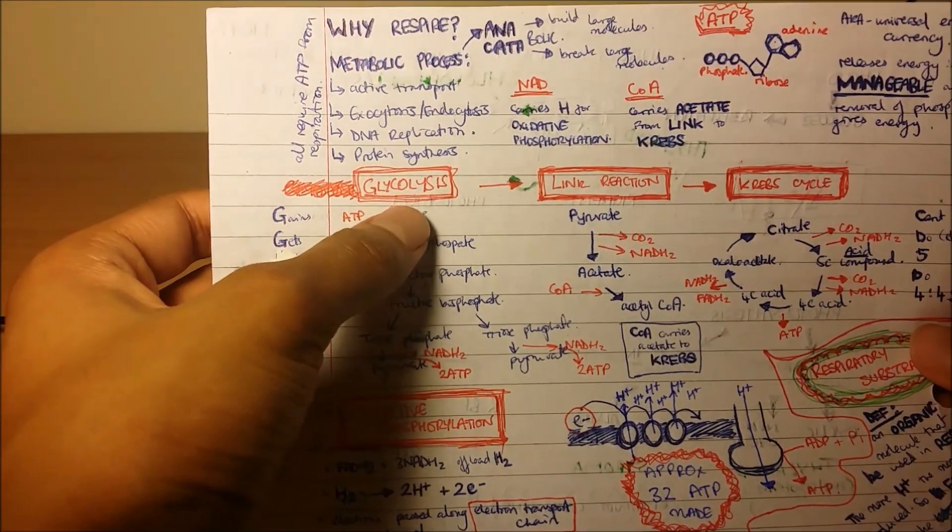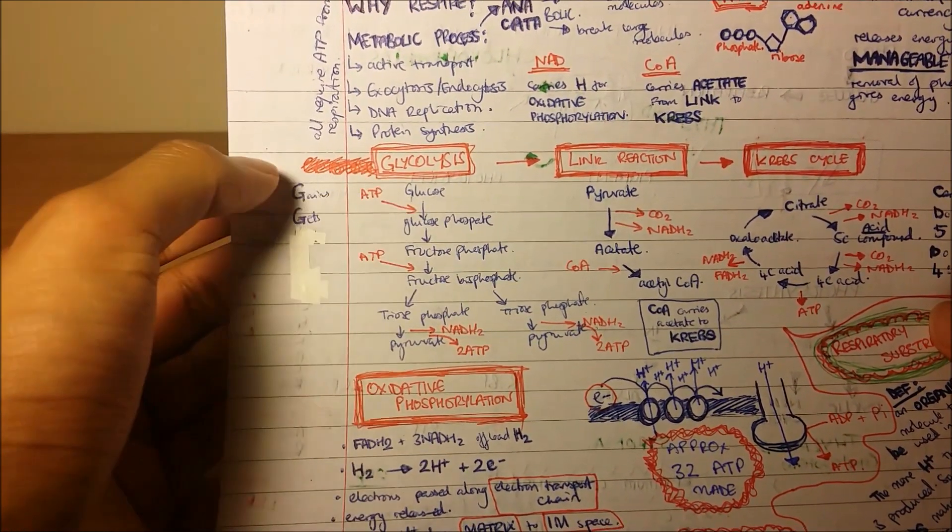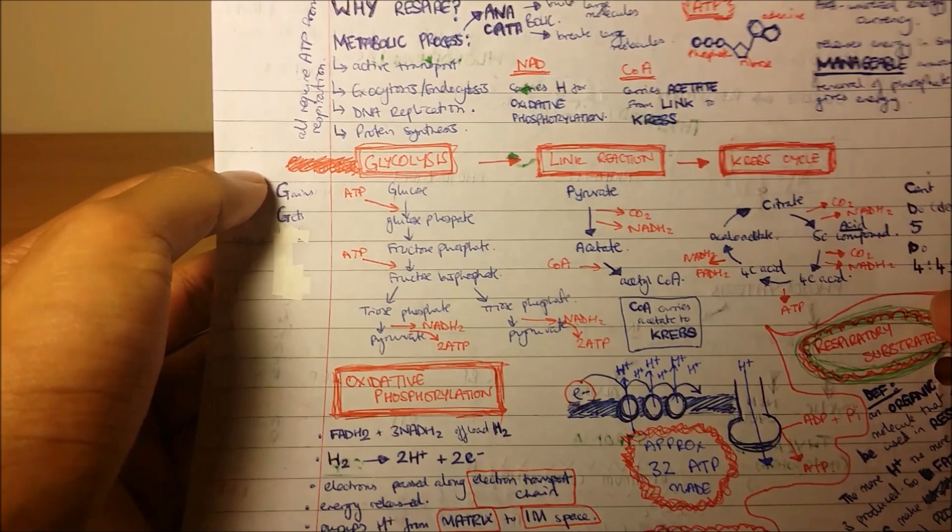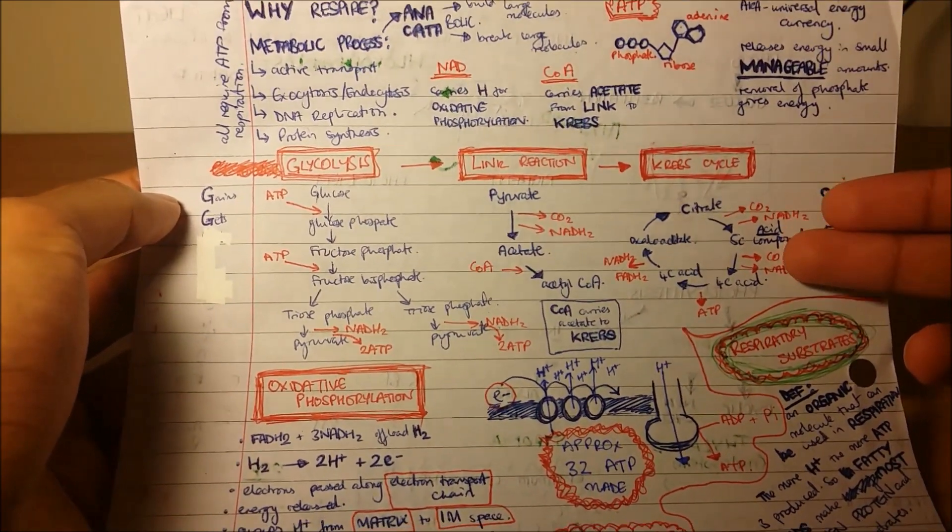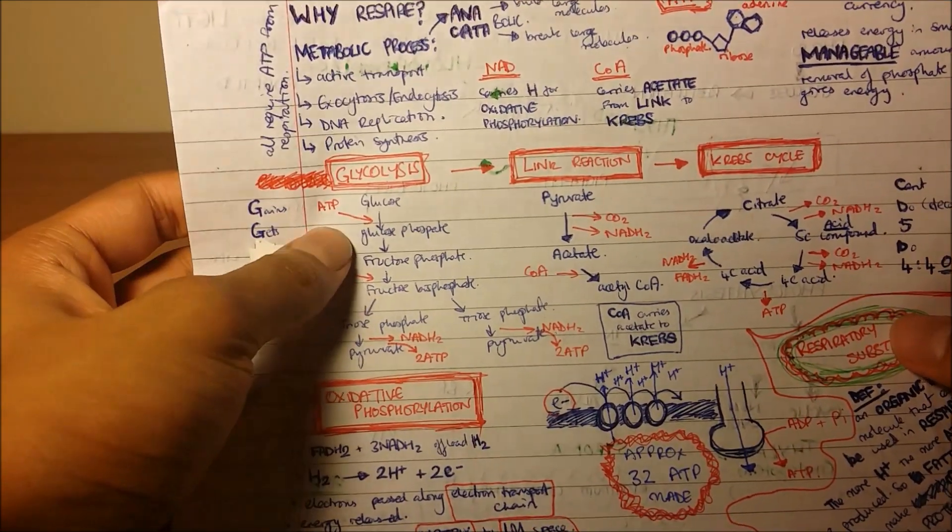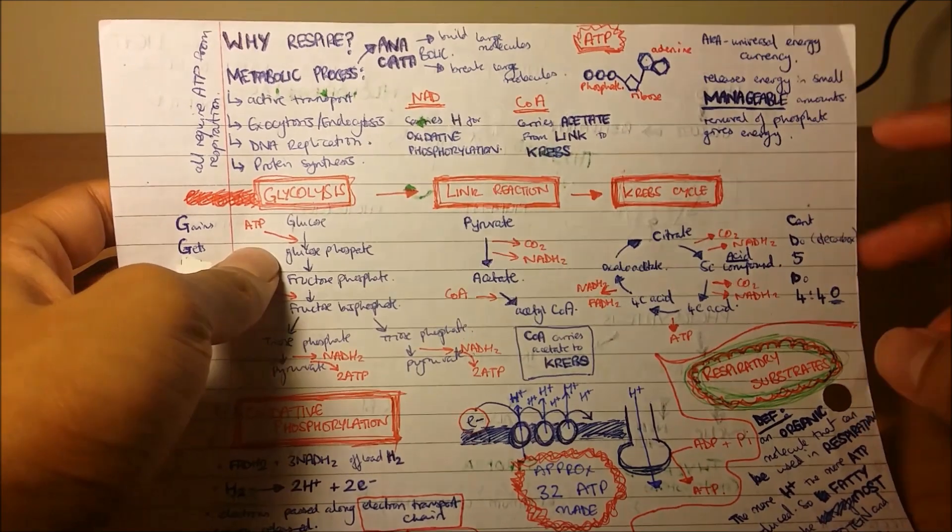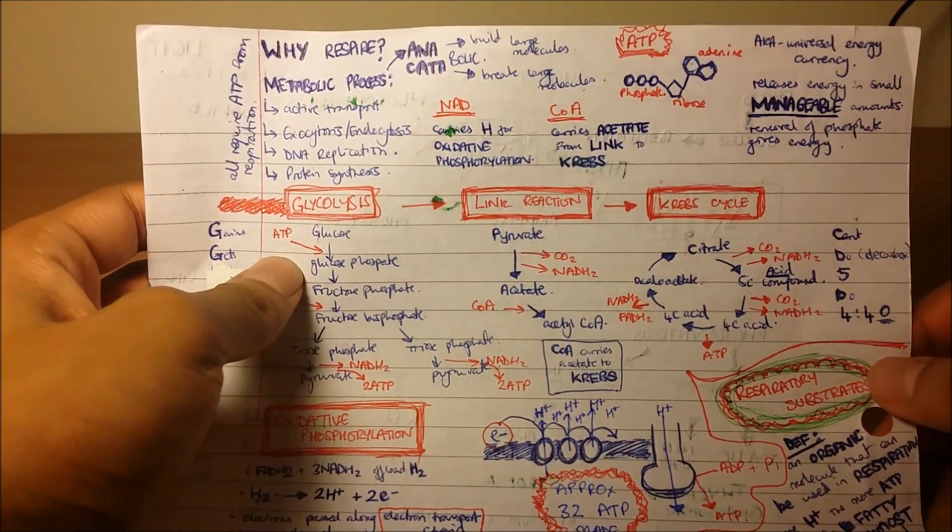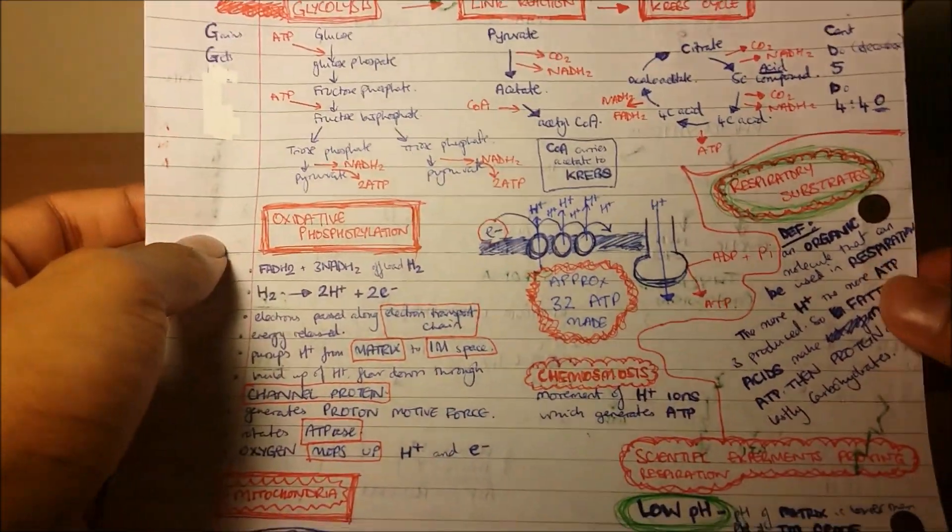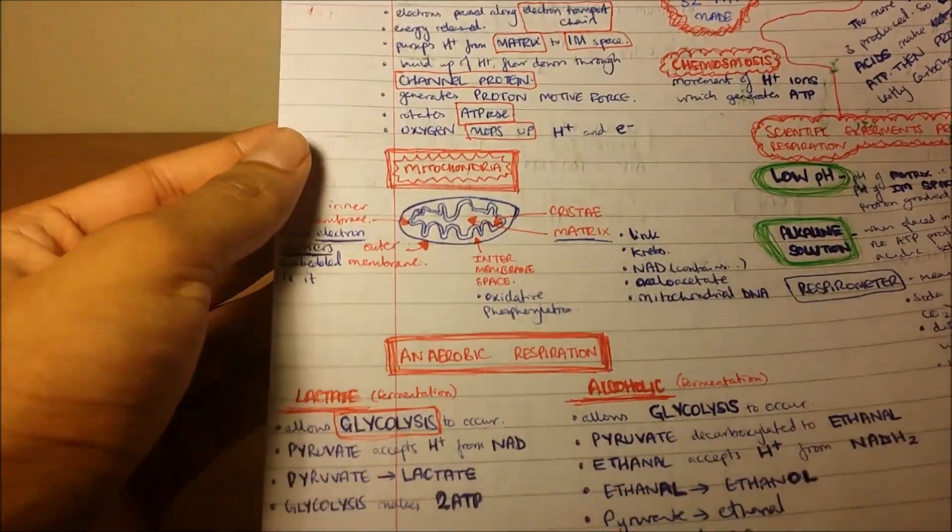For every heading that I saw—for example glycolysis—I wrote down everything that I could remember. Just the whole pathway, and then I went on to the link reaction, Krebs cycle, and then oxidative phosphorylation. Then just little things that I could remember about NAD or coenzyme A, and I tried to draw the structure of an ATP molecule. Literally everything that came to my head I just tried to write down and draw.